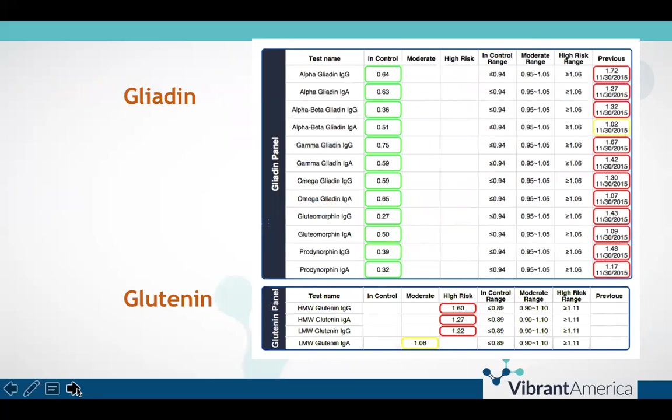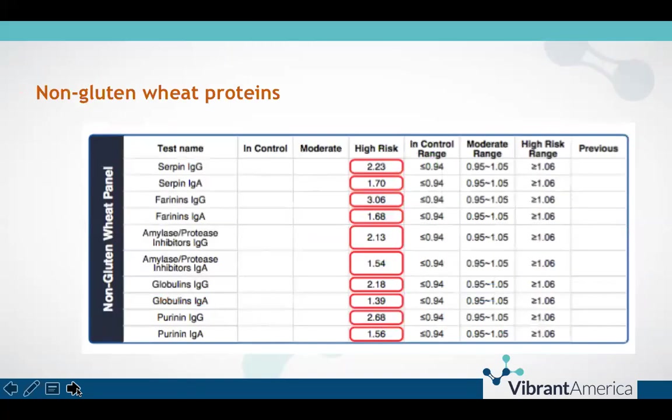These panels are here to point out if your patient is gluten-sensitive because these are proteins specific to gluten. Last, we have the non-gluten wheat proteins found only on Vibrant Wheat Zoomer. These proteins make up the 25–30% of the wheat proteome that is not gluten-associated and are distinct to wheat only. Through internal data, we have found that about 10% of individuals who have had a Wheat Zoomer run are sensitive only to these proteins and no gluten-related proteins — significant if you consider how many patients may be missed by testing for gluten alone.